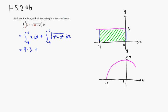And then we're going from negative 9 to 0. So we're talking about this quarter disk region.